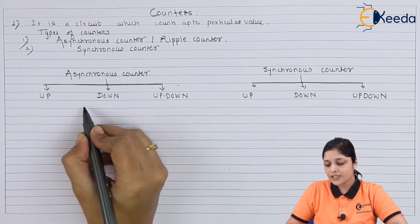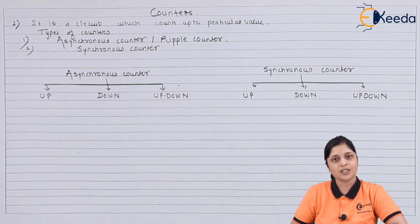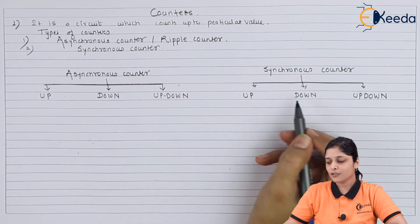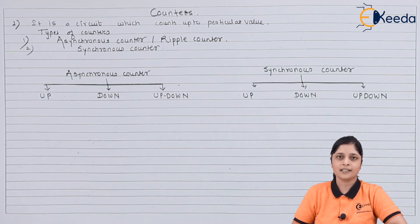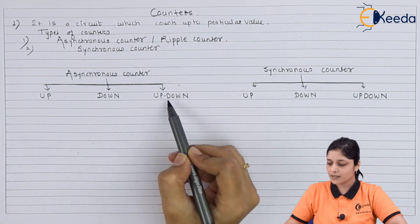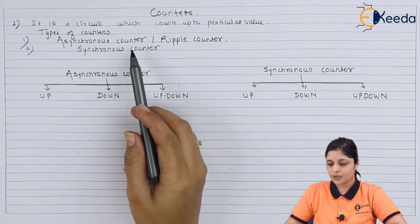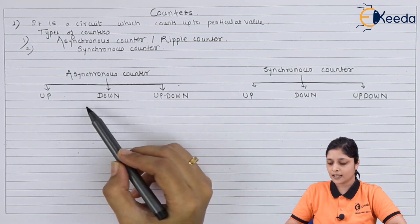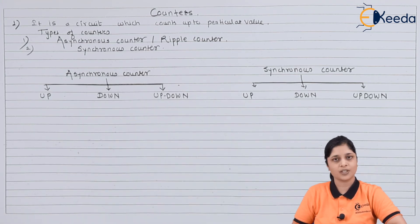Now at initial stage we can start with the three-bit up counter, three-bit down counter, three-bit up-down counters, and for synchronous counters also we can choose the types. So in this way, this is the bifurcation of counters - asynchronous and synchronous - and again they are divided into these three types.